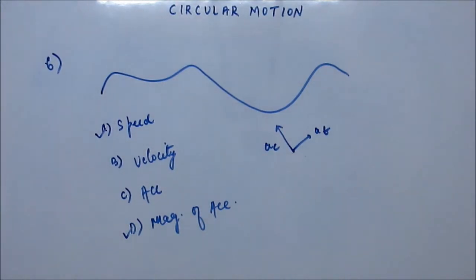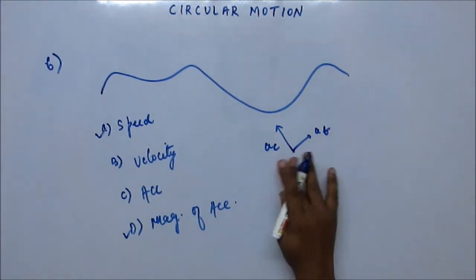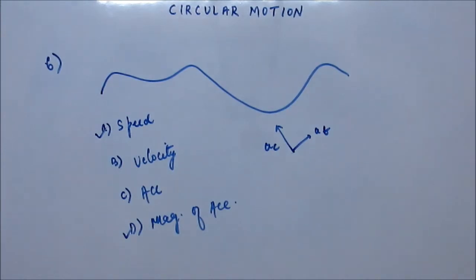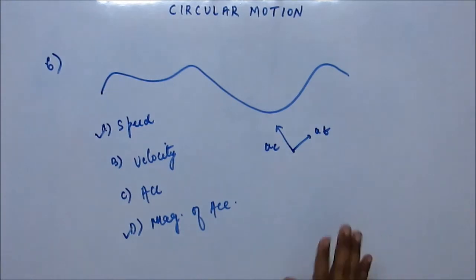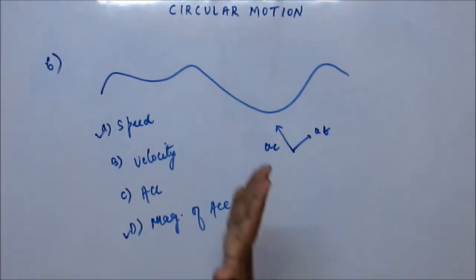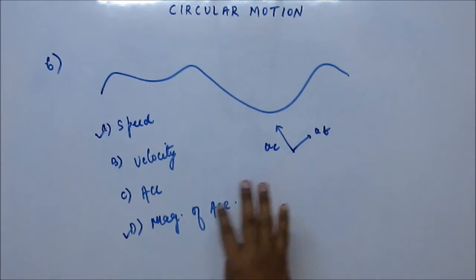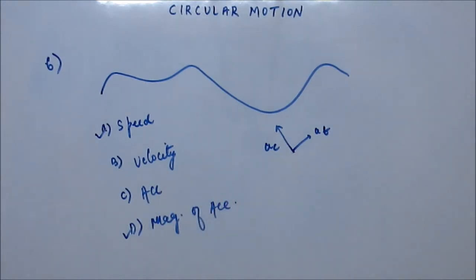The magnitude of acceleration, yes, can remain constant, because magnitude depends upon the velocity, the radius of curvature, and the angular velocity, and we can adjust all those things to keep the magnitude constant. But the direction would keep on changing, so acceleration as such cannot remain constant — its magnitude can remain constant.